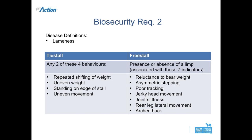For lameness, definitions are based on animal care assessments currently used. In tie stalls, lameness is defined as any two of four behaviors: repeated weight shifting, uneven weight bearing, standing on the edge of the stall, and uneven movement. In free stalls, look for the presence or absence of a limp, or seven indicators such as reluctance to bear weight, asymmetric stepping, poor tracking, jerky head movements, joint stiffness, rear leg lateral movement, and arched back.